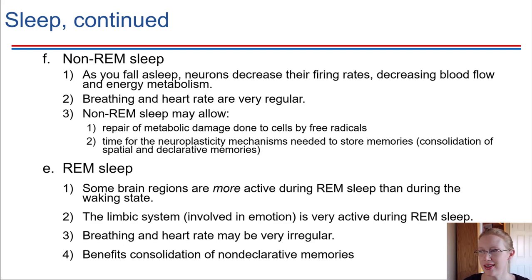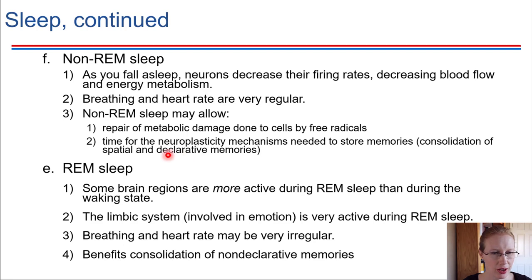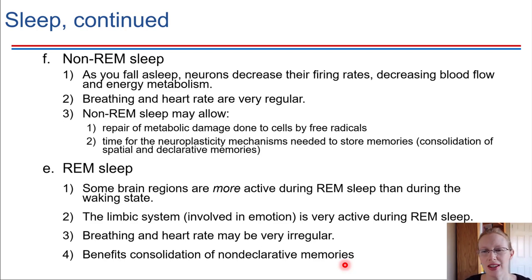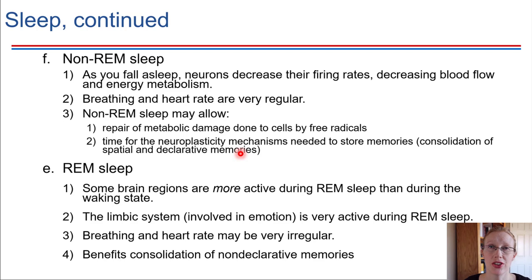To wrap up, let's talk about memory consolidation and how it's relevant to your lives. There are two types of memory: declarative memories, which have to do with facts and events — remembering specific things that took place — and non-declarative memories, which involve learned skills and the ability to carry out certain procedures. Sleep is very important for memory storage to happen properly.